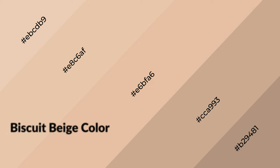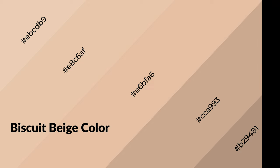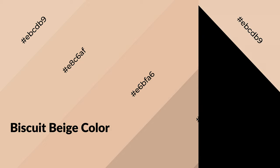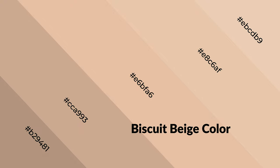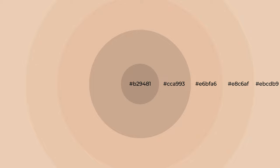Biscuit beige is a warm color and it emits cozier and active emotions. Warm colors are symbols of warmth, fire, heat, and sunshine. It also evokes joy, passion, love, and even anger. You can see them used in restaurants and gyms.